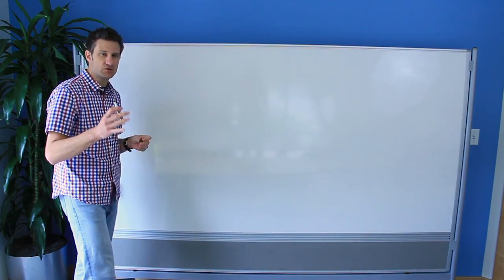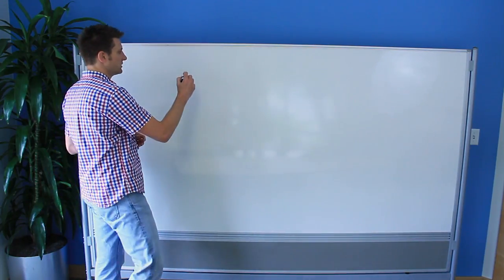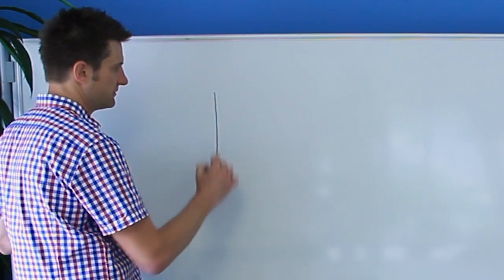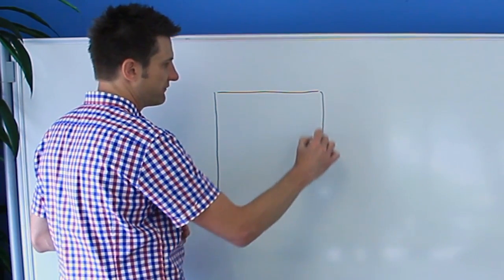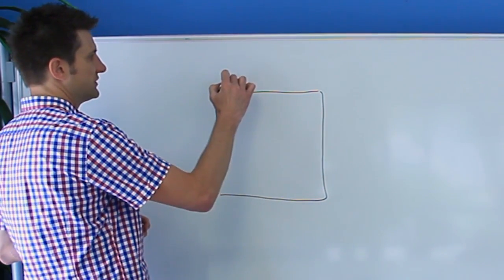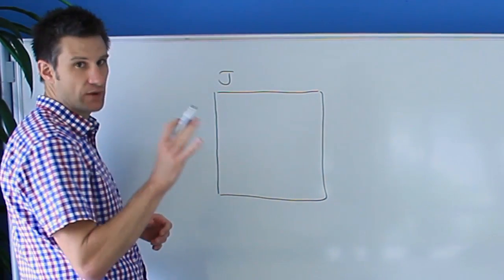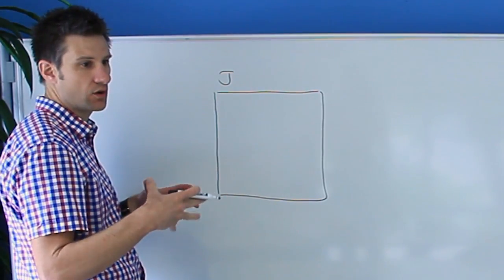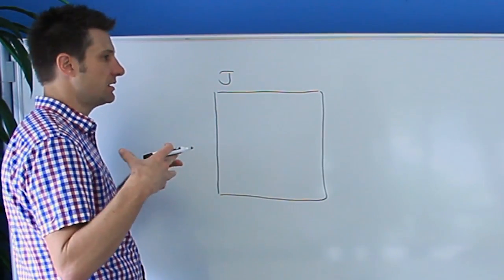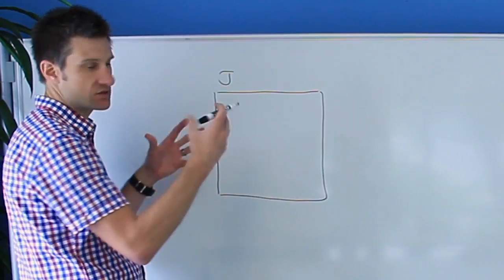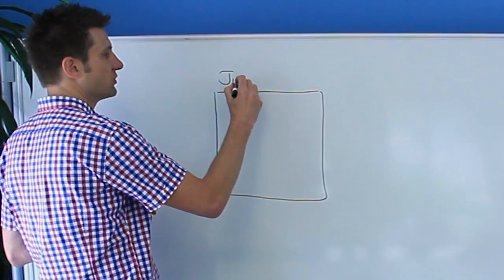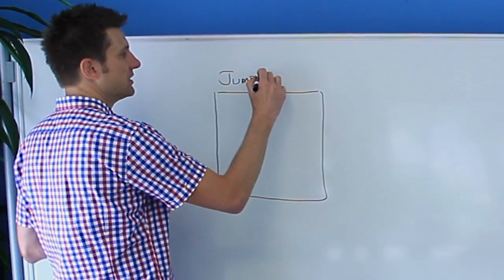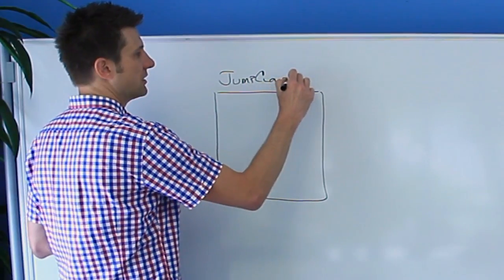Let's start first with JumpCloud's infrastructure. We're going to assume that this box here is the JumpCloud platform. This is the core cloud-based directory service where your user metadata, the information about groups, etc., is all managed and stored. So we'll call this guy JumpCloud platform.